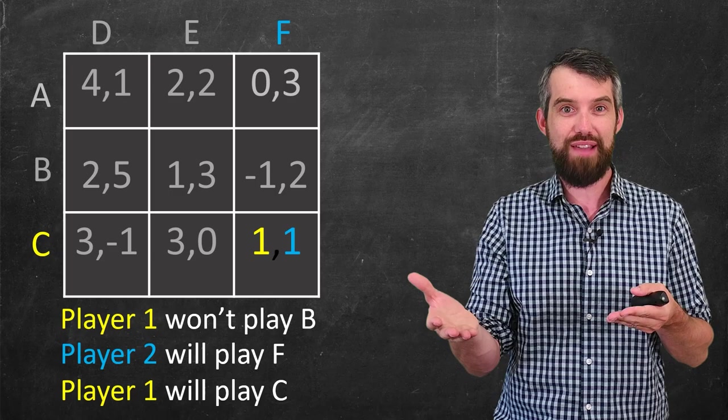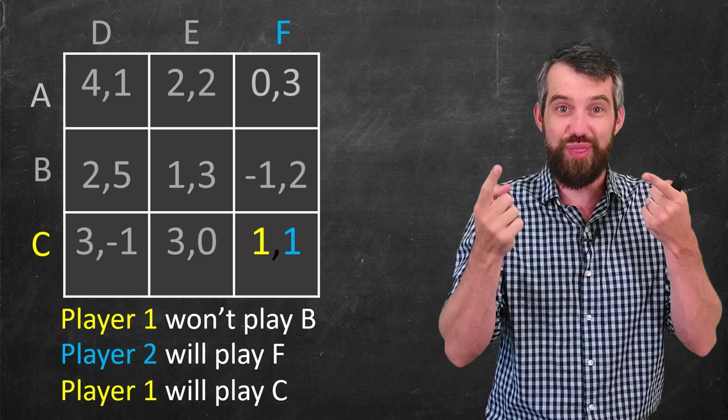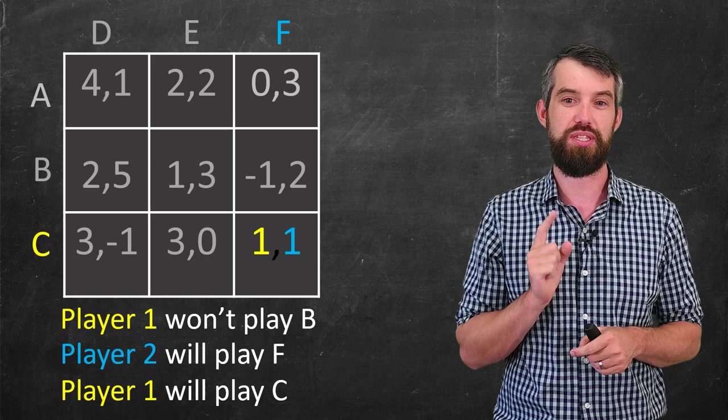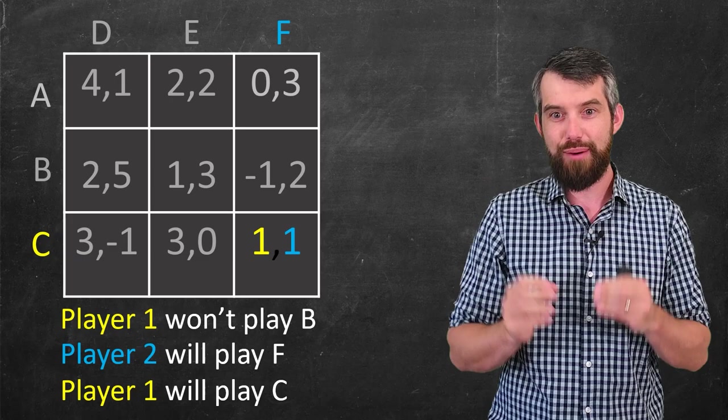So both players would be happier going for that, going for the two five, than they are for the one one. Unfortunately, it's just not quite so simple. Because if you knew that they were both going for the two five, if you knew that that was going to be a result, then player one would say, well, hold on, I want to switch.